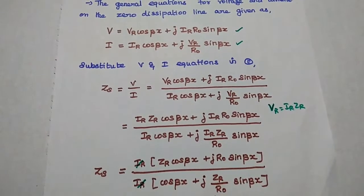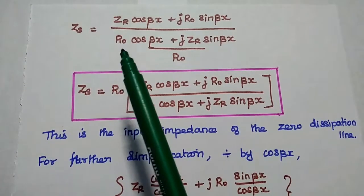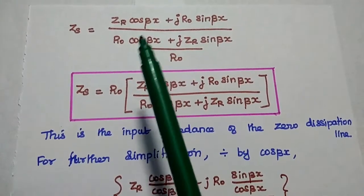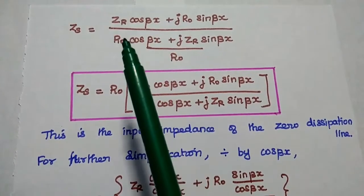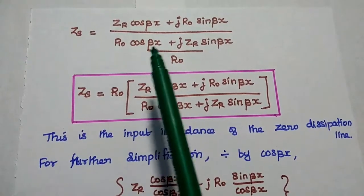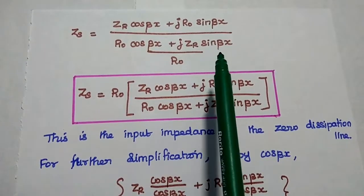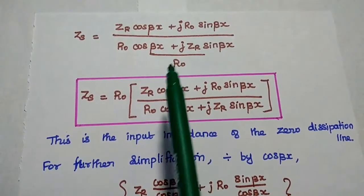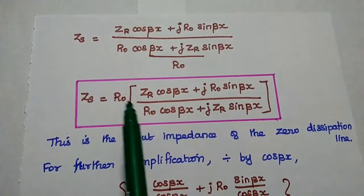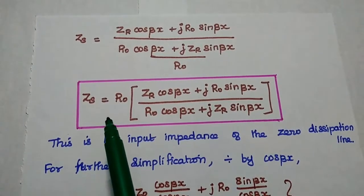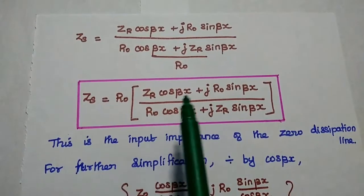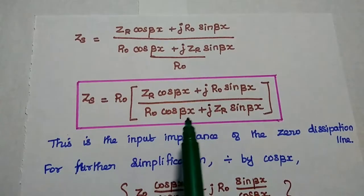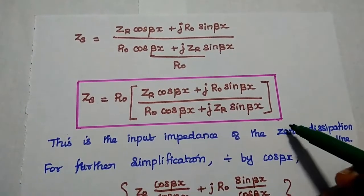In the next step, we can take r0 as a common factor in the denominator. The denominator becomes r0·cos(βx) plus j·Zr·sin(βx), the whole divided by r0. The denominator of the denominator moves to the numerator, so we get Zs equal to r0 into Zr·cos(βx) plus j·r0·sin(βx), divided by r0·cos(βx) plus j·Zr·sin(βx).